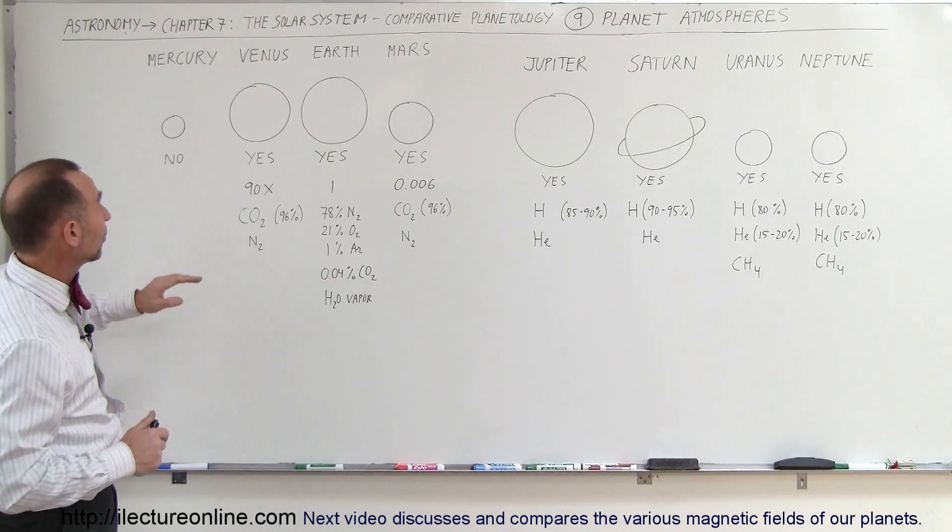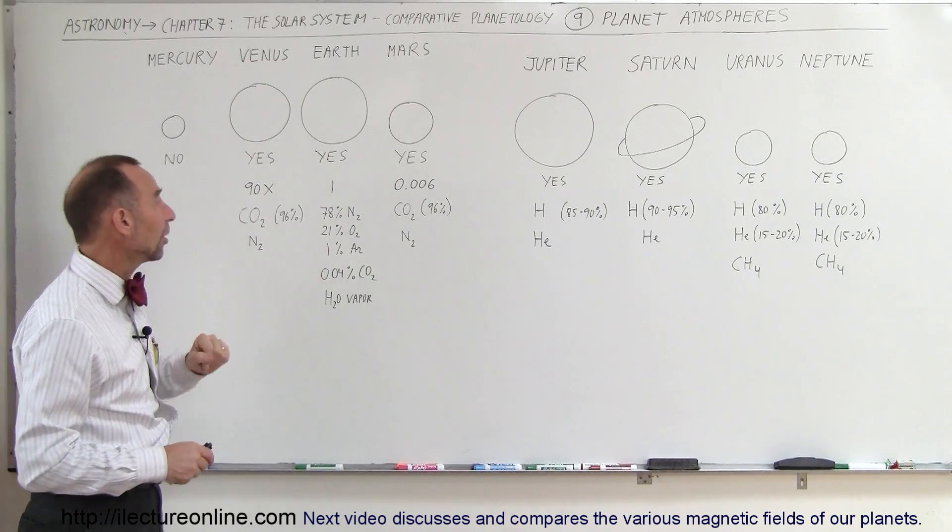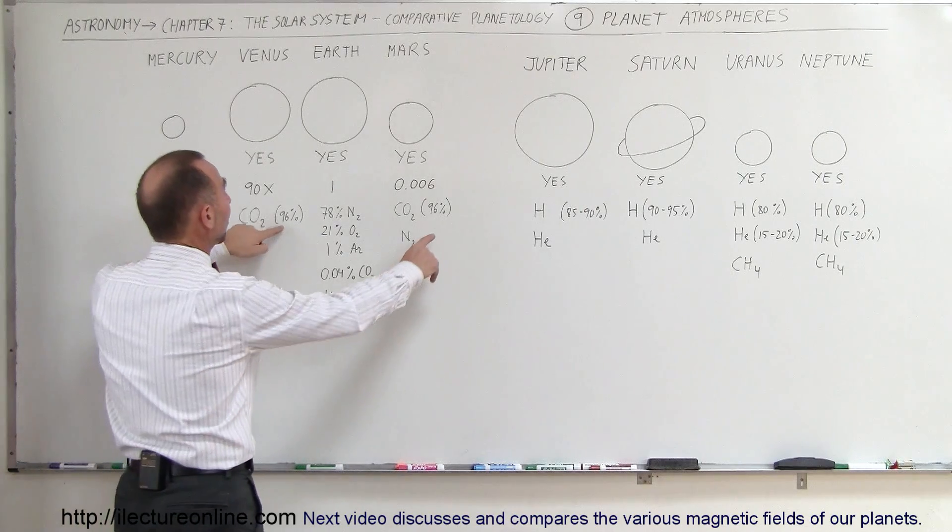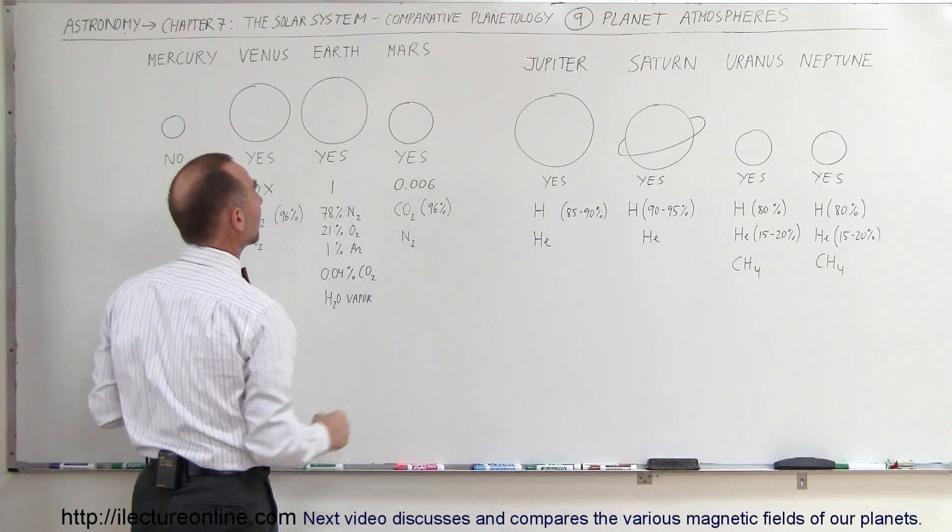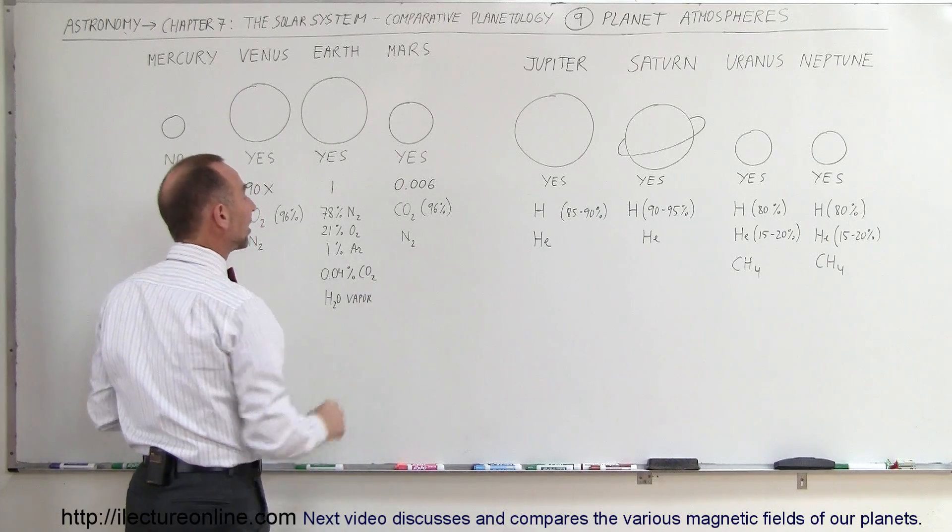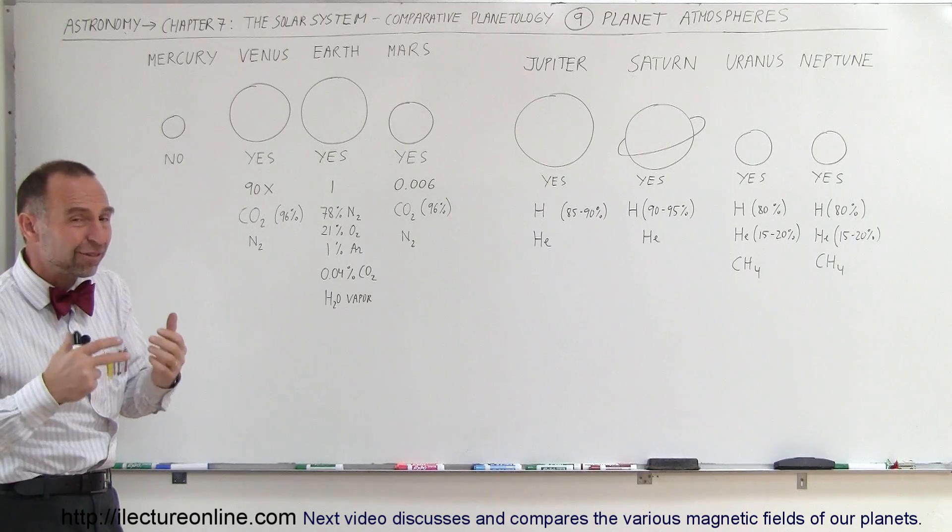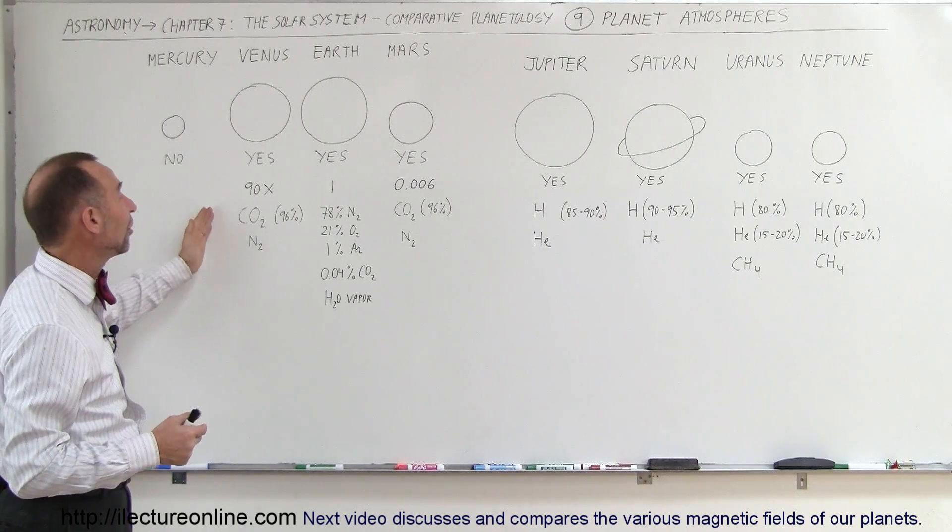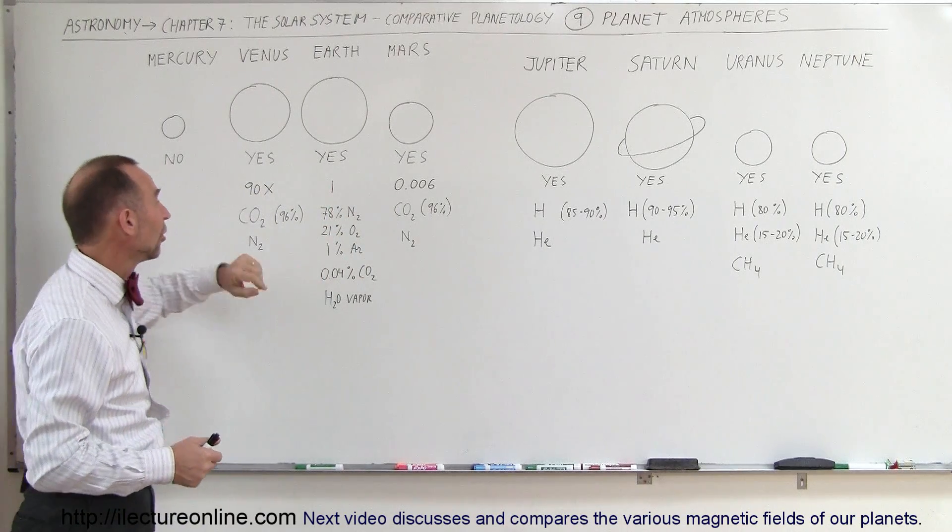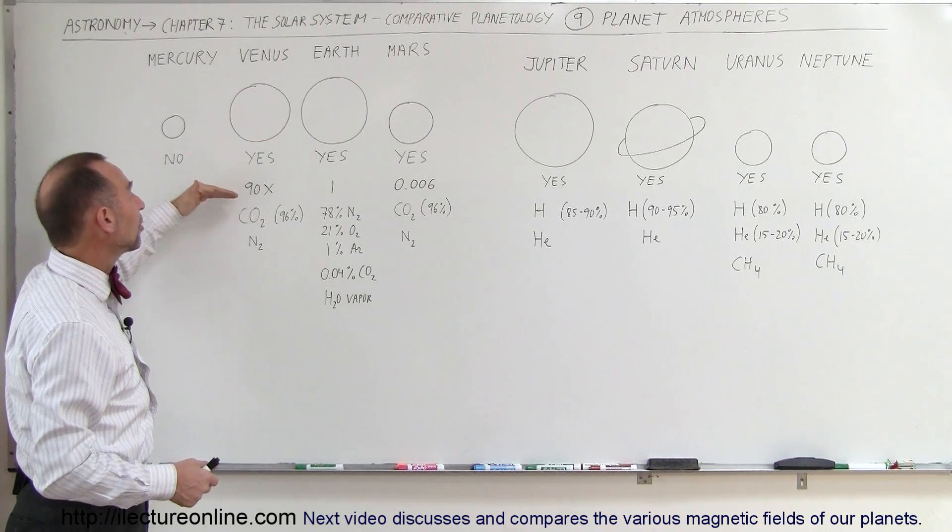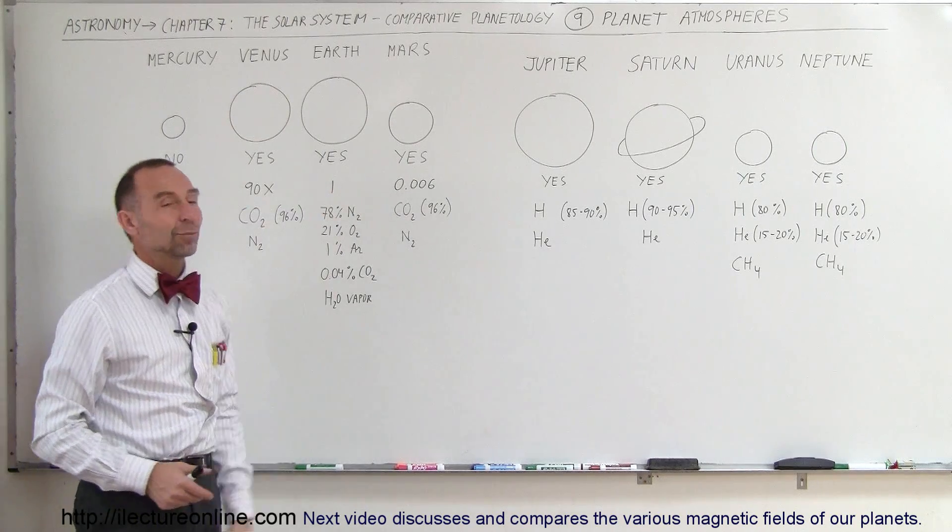Consistency-wise, there's a lot of difference between the atmospheres of Venus, Earth, and Mars. If you compare Venus and Mars, however, you notice that both have very large percentages of carbon dioxide, and the second most abundant gas is nitrogen for both. They're very similar in consistency, just very different in atmospheric pressures. The atmospheric pressure on Venus is more than 1,000 times the atmospheric pressure on Mars.